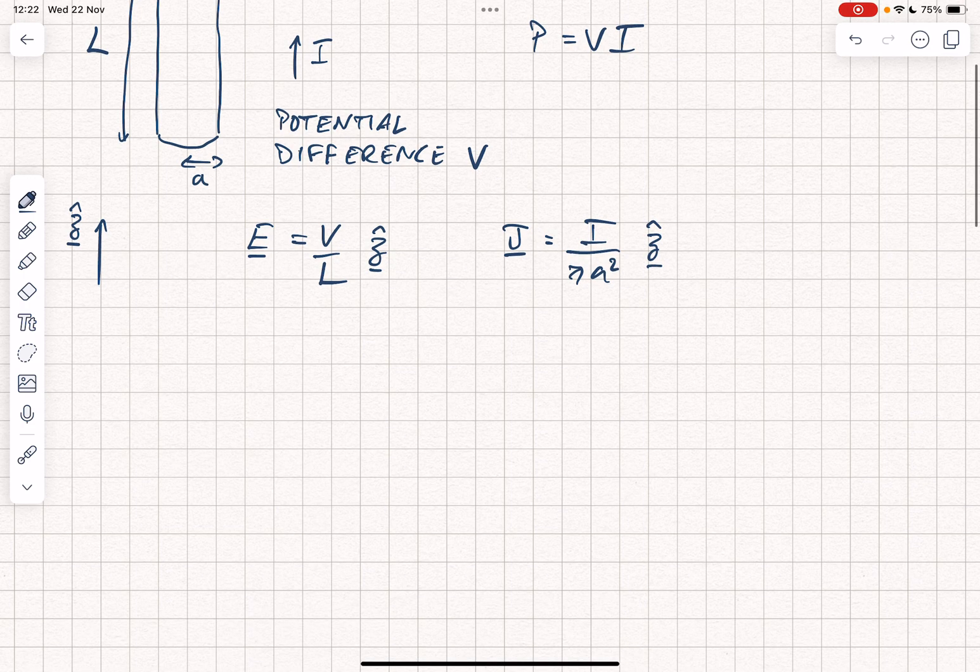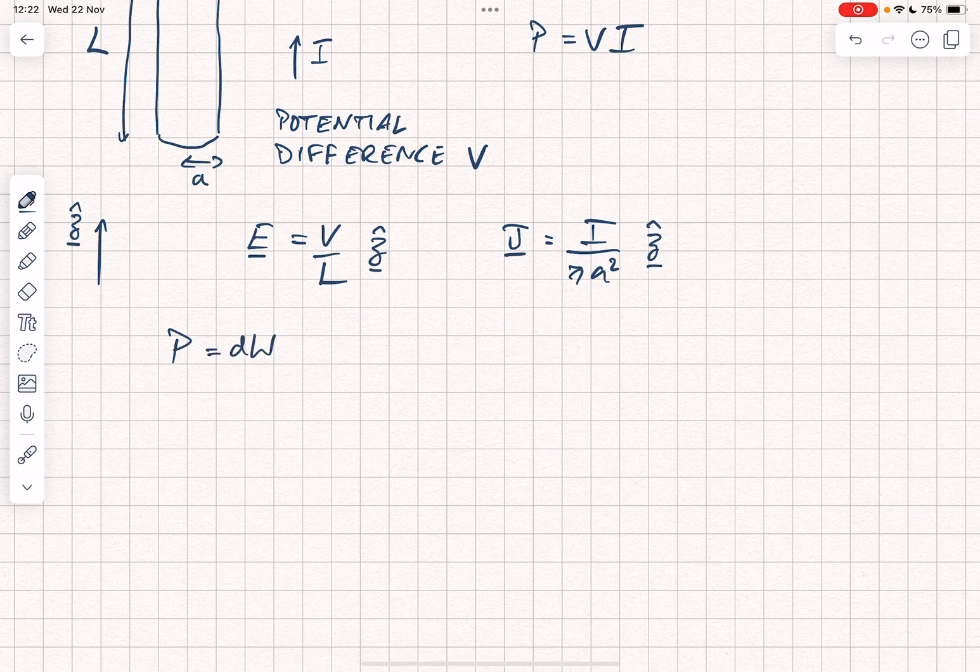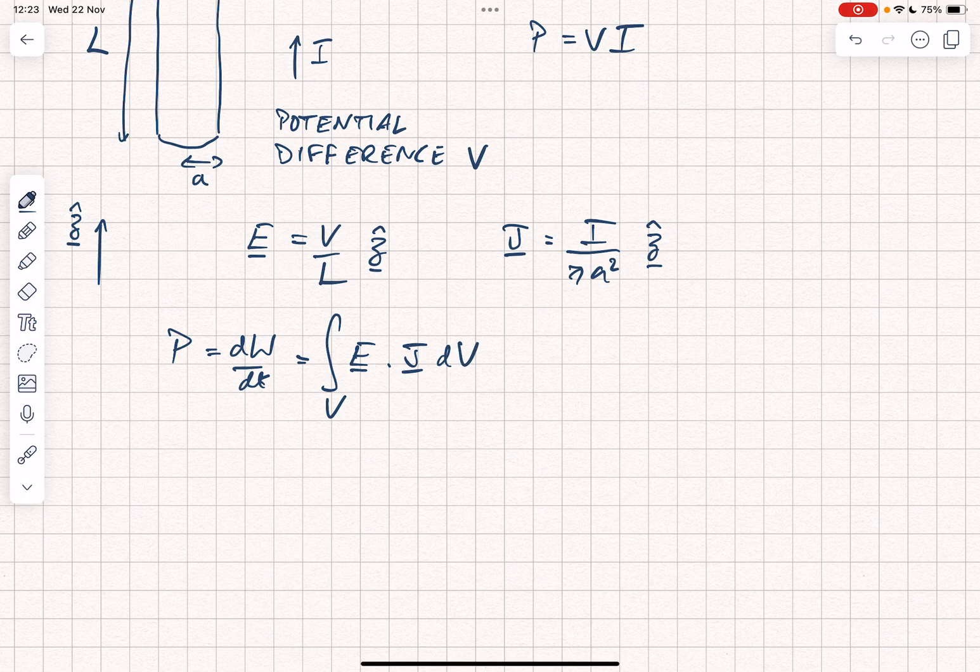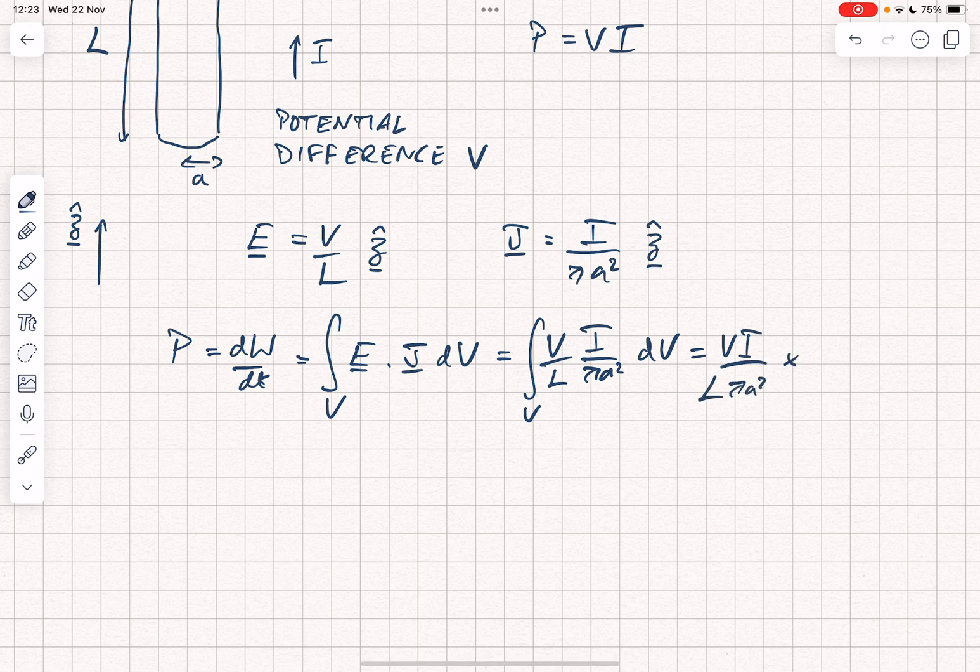Now if we think about what we talked about earlier, the power P, which is dw by dt, which is equal to the volume integral of E dot J dV. And that can be written as the volume integral of V, the potential difference over L, I over pi A squared times the volume integral element, which is just VI over L pi A squared multiplied by the volume, which is just L times pi A squared.